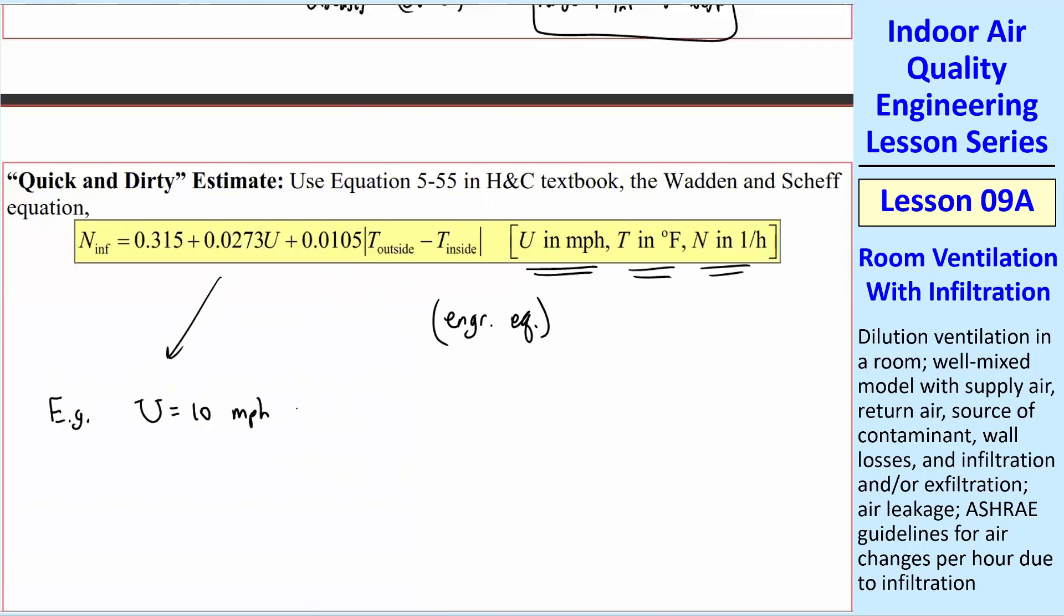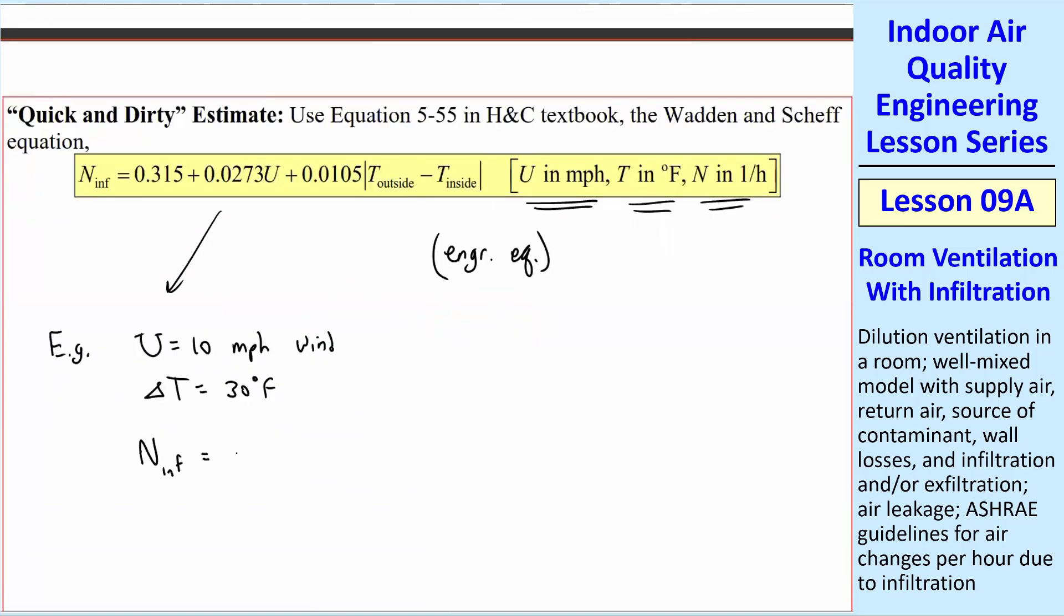Example, suppose we have 10 mile per hour wind, and delta T is 30 degrees F. So this is a typical nice fall weather in Pennsylvania. And so N infiltration is equal to 0.315 plus 0.0273 times 10. You don't put any units in. Just put the numbers plus 0.0105. Notice this is absolute value up here for temperature because they're saying that whether it's cold outside or hot outside compared to inside, you still have some infiltration due to that temperature difference.